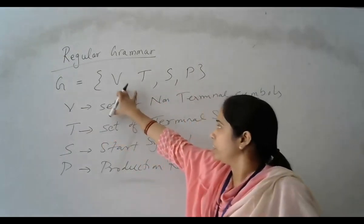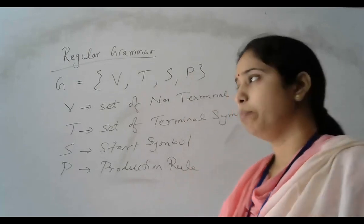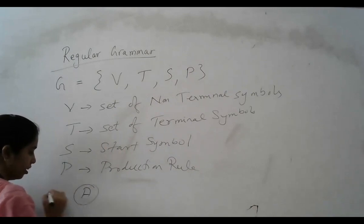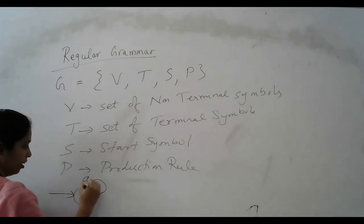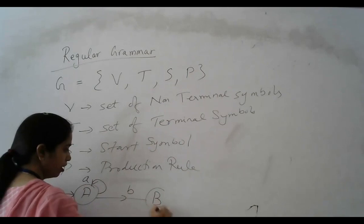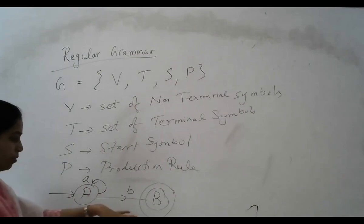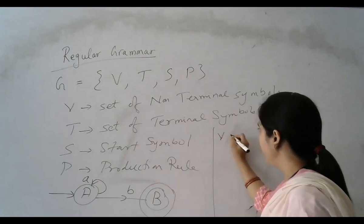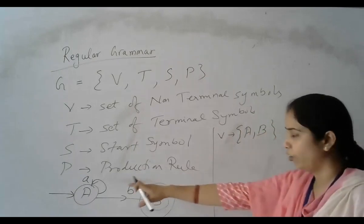Where V is a set of non-terminals, T are the terminals, S is the start symbol, and P is the production rule. Take an example like A tends to A, B and B is the final state. So when we make the grammar for this automata, we can say that V is the set of non-terminals — V contains A and B. We have two non-terminals.